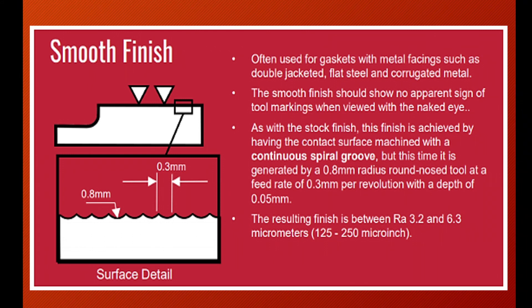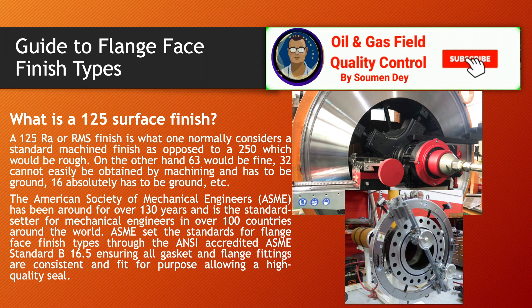Smooth finish results in a roughness between Ra 3.2 and 6.3 micrometers, equivalent to 125 to 250 micro-inch. Smooth finish flanges are more common for low pressure and/or large diameter pipelines and are primarily intended for use with solid metal or spiral wound gaskets. When working with a smooth finish, it is important to use a thinner gasket to lessen the effect of creep and cold flow. However, both a thinner gasket and the smooth finish require a higher compressive force — that is, bolt torque — to achieve the seal.